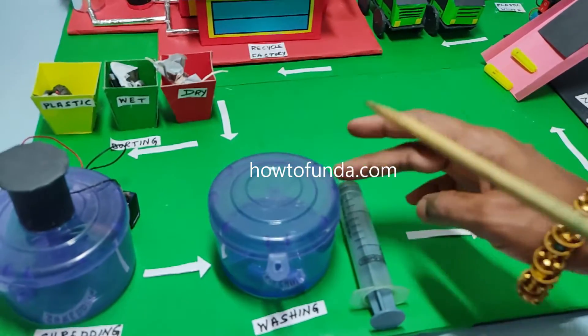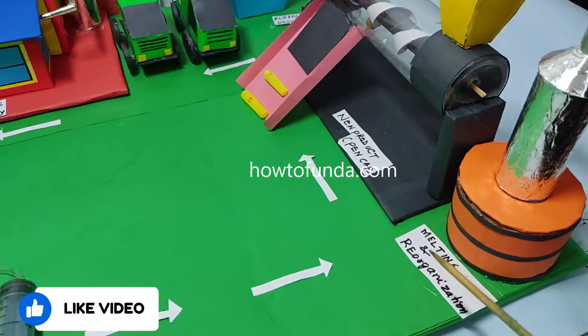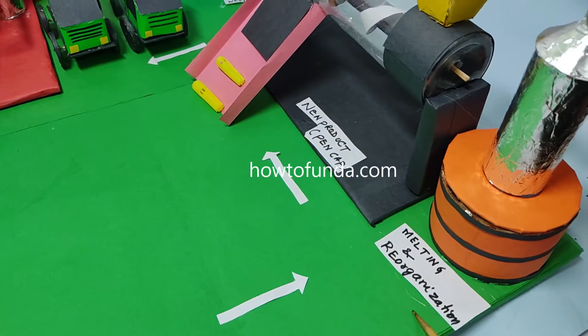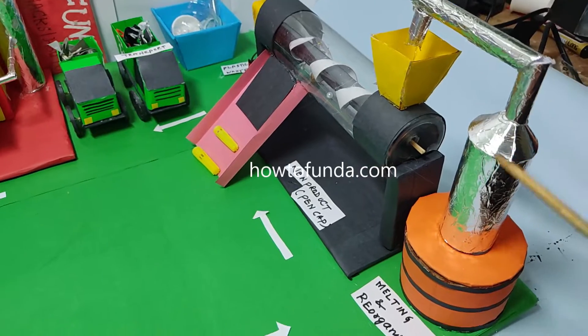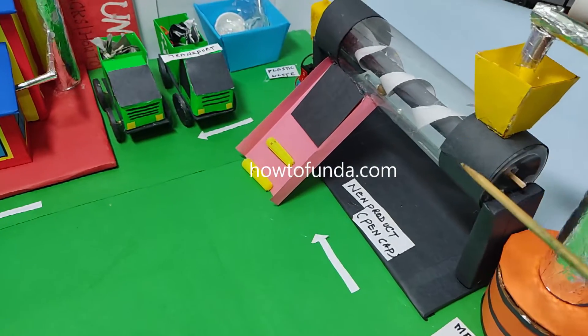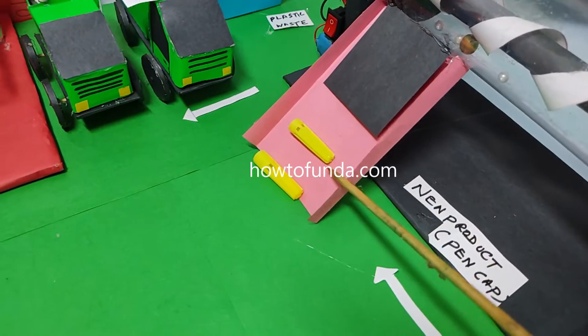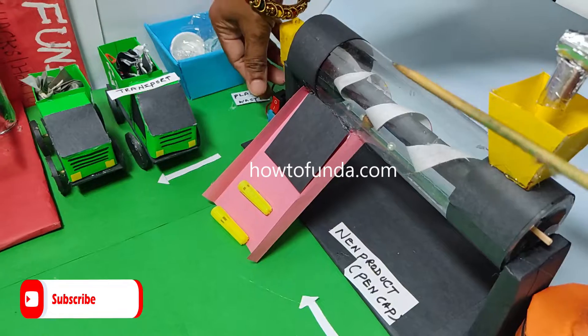Once the plastic is cleaned, we have a melting and reorganization machine that melts the plastic and puts it into a processor where it makes sketch pen caps from the plastic waste.